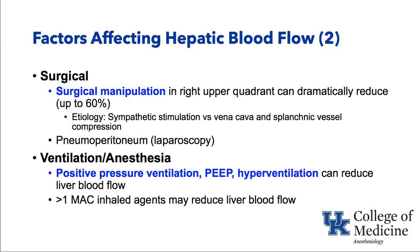Pneumoperitoneum during laparoscopy also reduces hepatic blood flow, as do certain ventilation changes during anesthesia — such as switching from negative to positive pressure ventilation, high peak airway pressures, high PEEP, and hyperventilation with hypocarbia. Very high inhaled anesthetic agent concentrations can also reduce blood flow to the liver.